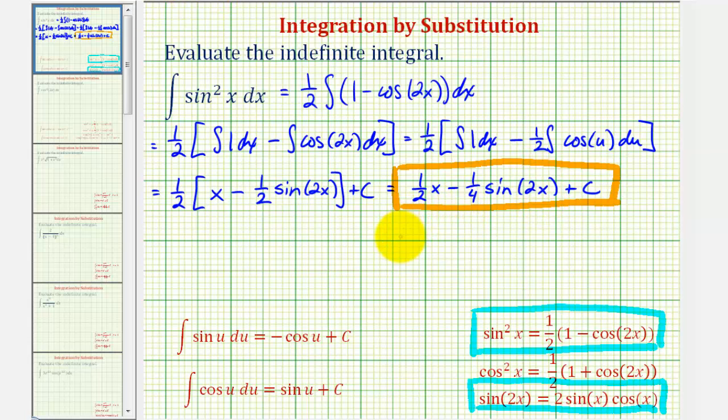We don't need to but let's go ahead and show how we could do this. This would be equal to one half x minus one fourth times again sine two x is equal to two times sine x times cosine x.